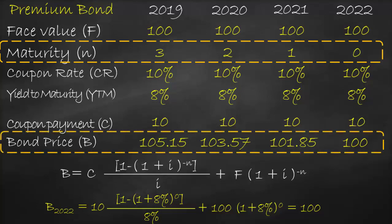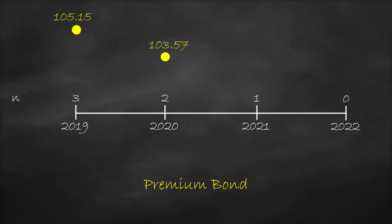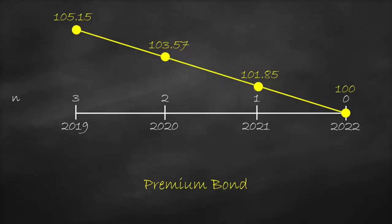Comparing N and bond price with all other variables constant: as maturity decreases — as we move toward maturity — the bond price of a premium bond keeps decreasing. We can draw this graphically. In 2019 (N=3), bond price is 105.15. In 2020 (N=2), it is 103.57. In 2021 (N=1), it is 101.85. In 2022 (N=0), it is 100. The premium bond price decreases every year until it reaches face value at maturity.